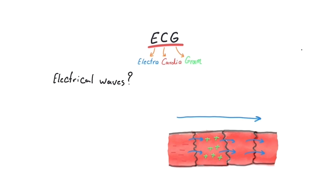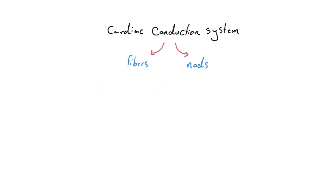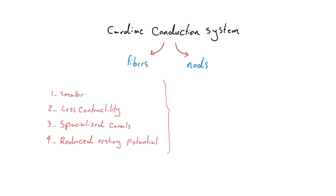One important thing to note is that in certain parts of the heart, the intercalated discs are highly specialized and contain a much greater number of gap junctions. This allows electrical impulses to travel much faster in these areas, forming what we call the cardiac conduction system. Histologically and anatomically, this system is made up of nodes and fibers — specially organized clusters of cells. These conduction system cells differ from regular cardiac muscle cells: they are smaller, have little or no contractile ability, contain specialized ion channels, and are more excitable, meaning they have a lower resting membrane potential and can depolarize quickly in response to small voltage changes.